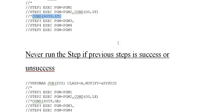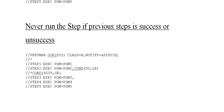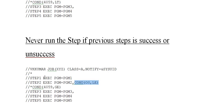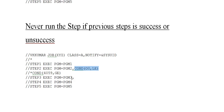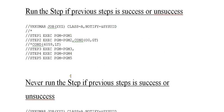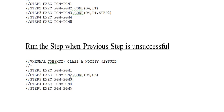The final scenario is: never run the step, whether the previous step succeeded or failed. If you have 12 or 13 steps and during testing you only want to run step one and step five, for the steps you don't want to run just give the condition COND equal to (0, 0, LE) or COND equal to (4095, GT). This bypasses those steps and runs only the ones you want. This is very helpful when testing a JCL with multiple steps.